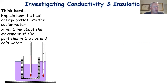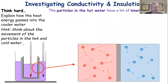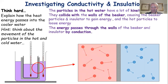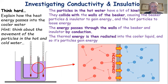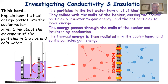The key question is how that energy is actually passing into the cooler water - think about the movement of particles. Particles in the hot water have a lot of kinetic energy; they collide with the walls of the beaker, causing the beaker particles and insulator to gain energy while the hot particles lose energy. The energy passes through the walls and insulator by conduction, then is radiated into the cooler liquid. This illustrates one of the key laws of thermodynamics: thermal energy will always move from a hot place to a cold place.